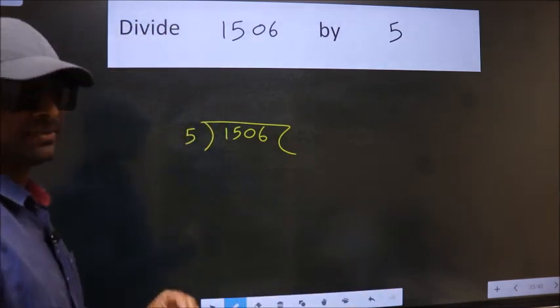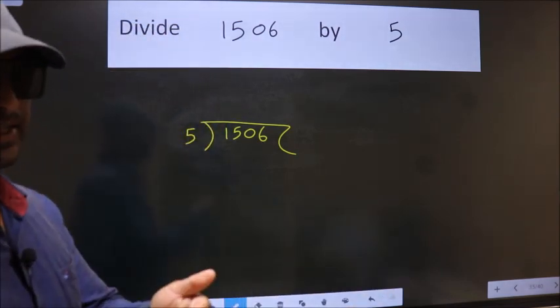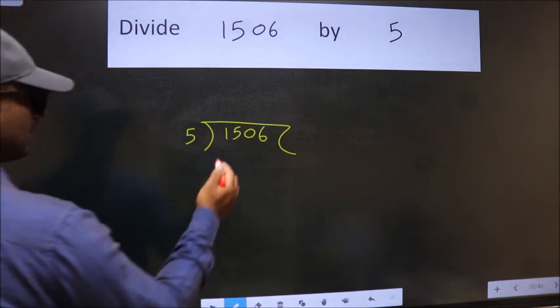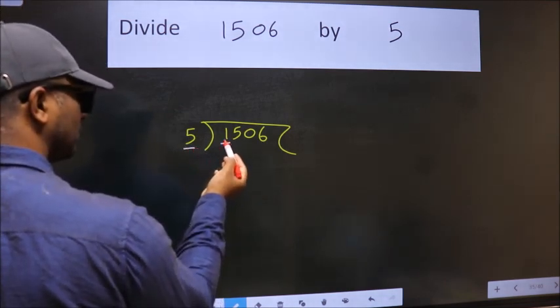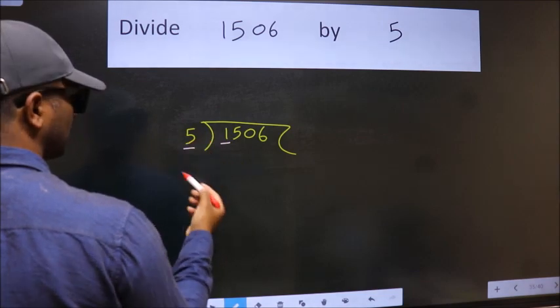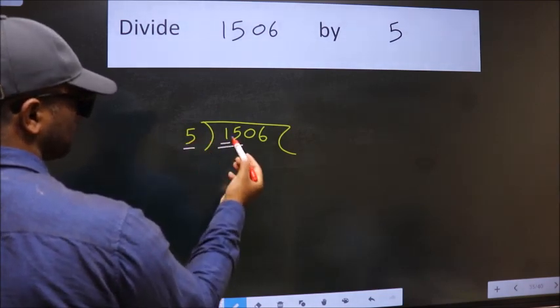This is your step 1. Next, here we have 1, here 5. 1 is smaller than 5. So, we should take two numbers, 15.